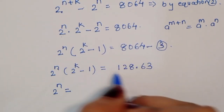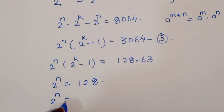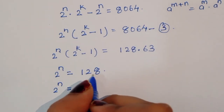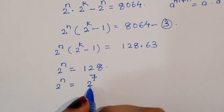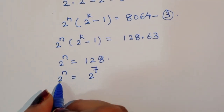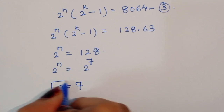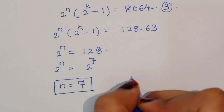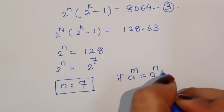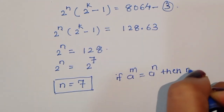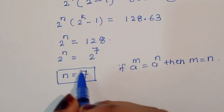From the first factor, 2 power n equals 128. Since 128 equals 2 power 7, we have 2 power n equals 2 power 7. Using the formula: if a power m equals a power n then m equals n, we get n equals 7.